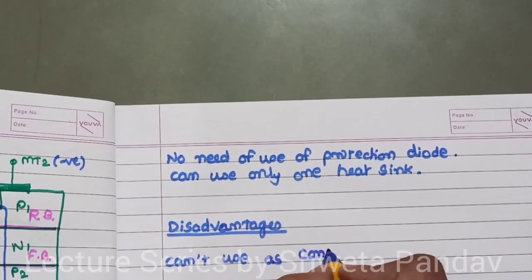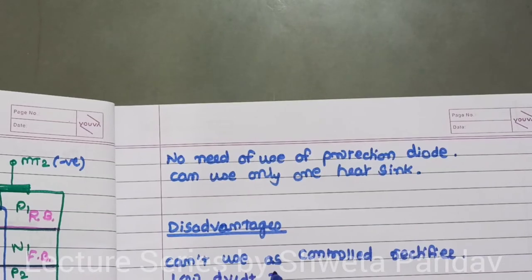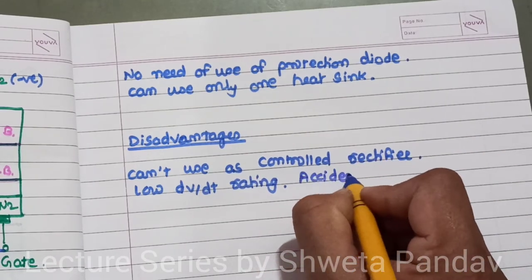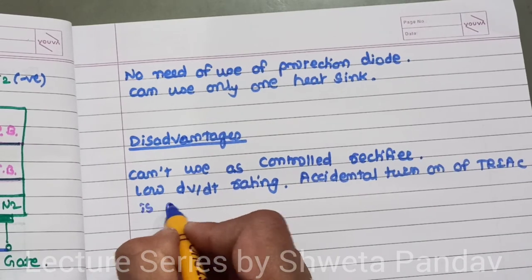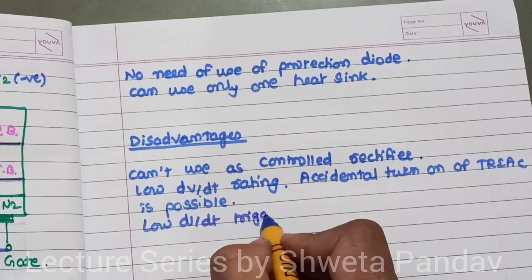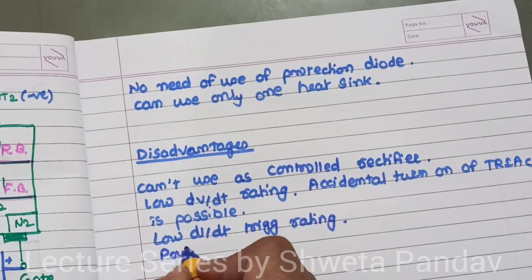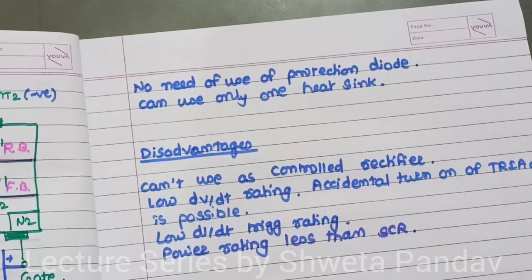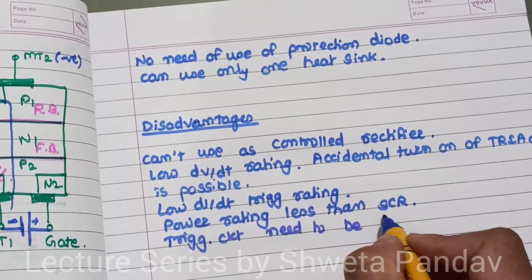Now let us see the disadvantages. We cannot use a triac as a controlled rectifier. It has a low dV/dt rating, so because of the low dV/dt rating, accidental turn-on of the triac is possible. It also has a low triggering rating. Its power rating is less than that of an SCR. Additionally, the triggering circuit for the triac needs to be designed carefully.